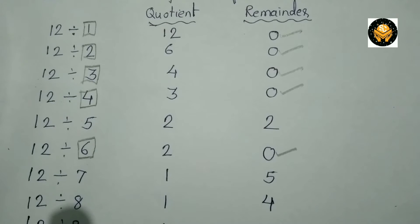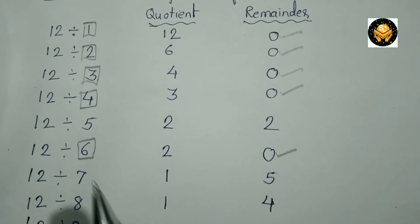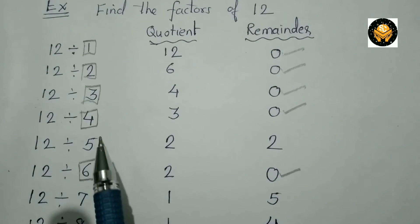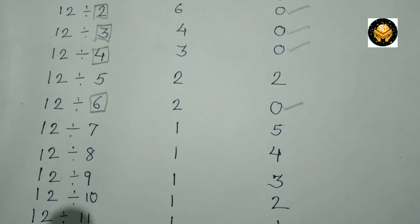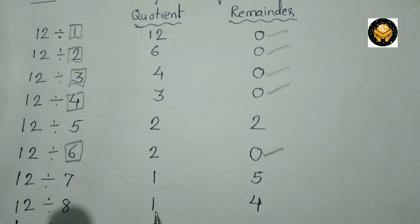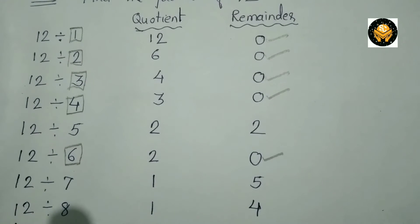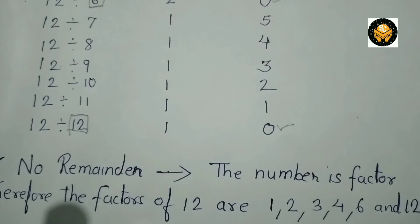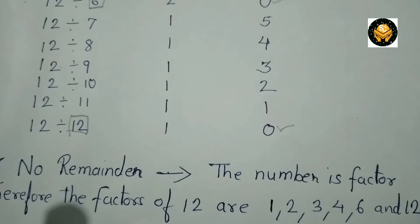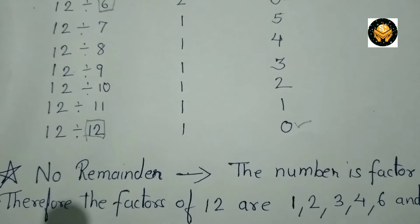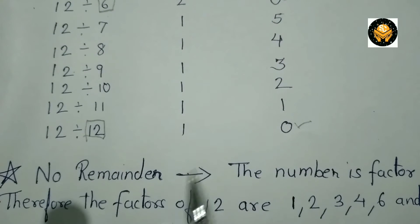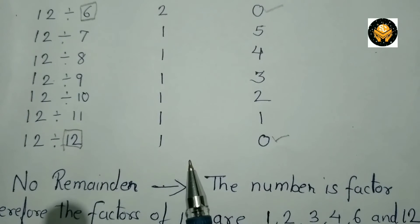In this example, when we divide 12 by 1, 2, 3, 4, 6, and 12, we get remainder 0. It means when the remainder is 0, the number is called a factor. Therefore, the factors of 12 are 1, 2, 3, 4, 6, and 12.